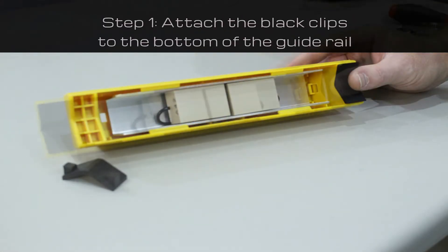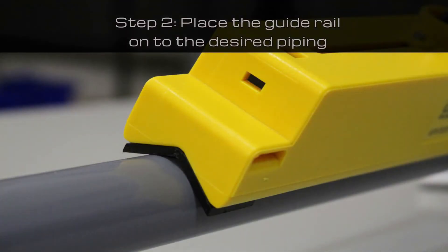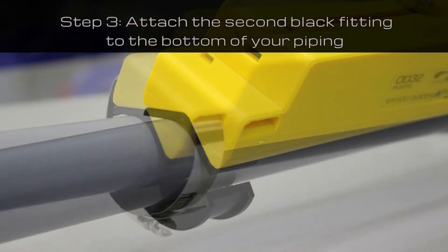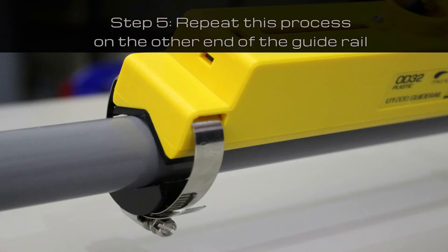First, attach the black clips to the bottom of the guide rail. Then place the guide rail on the desired piping. Attach the second black fitting to the bottom of your piping. Secure the fitting in place with the banding provided and repeat this process on the other end of the guide rail.